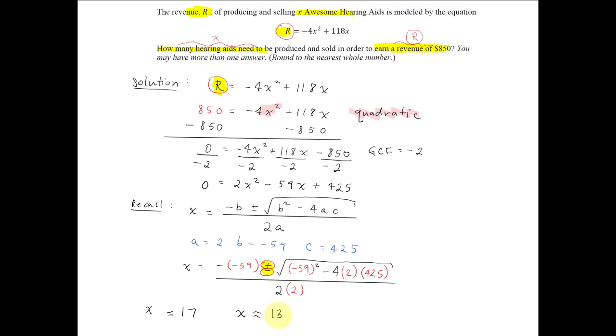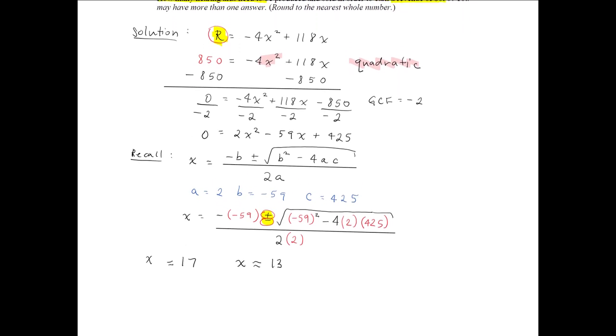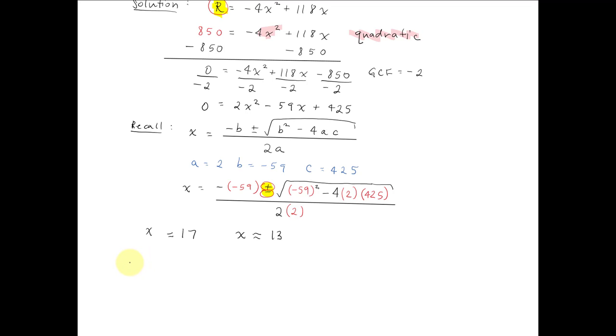So what were we looking for? What does this all mean? Well, we were looking for the number of hearing aids produced and sold in order to earn a revenue of $850. Therefore, when the revenue is $850, 17 or 13 hearing aids are produced and sold.